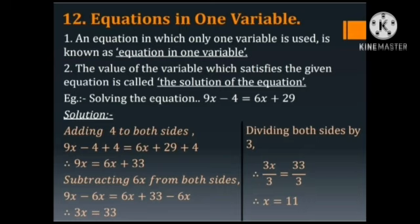Solution: Adding 4 to both sides. So 9x minus 4 plus 4 is equal to 6x plus 29 plus 4. Therefore, minus 4 plus 4 will cancel.